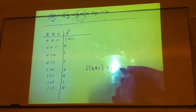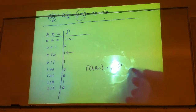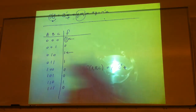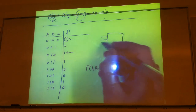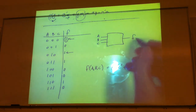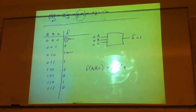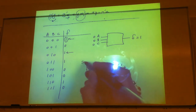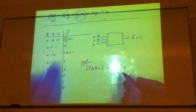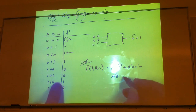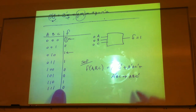The first min term is a-prime, b-prime, c — this is true only if a equals 0, b equals 0, and c equals 1. So if your function is defined to be 1 for that input combination, you include it. You have a black box with inputs a, b, c and you're saying: if I input 0, 0, 0, I get 1. So you represent this behavior with the sum-of-products form. The next terms are a-prime, b, c-prime and a-prime, b, c, then a, b, c-prime, and so on.